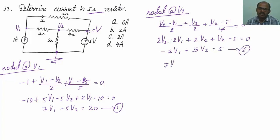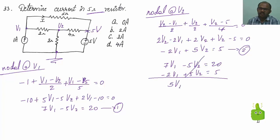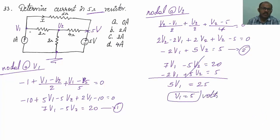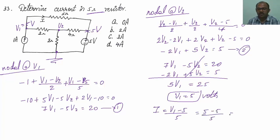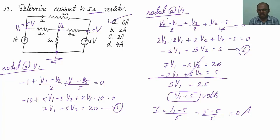Adding equation 1 and equation 2: 7V1 minus 5V2 equals 20, and minus 2V1 plus 5V2 equals 5. The V2 terms cancel, giving 5V1 equals 25, so V1 equals 5 volts. Therefore, I equals V1 minus 5 divided by 5, which equals 5 minus 5 divided by 5, which equals 0 amperes. The current flowing in the 5 ohm resistor is 0 amperes — no current flows.